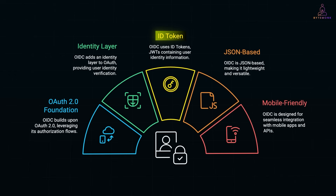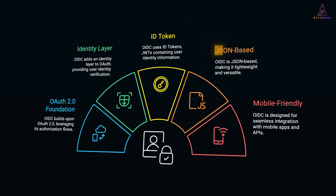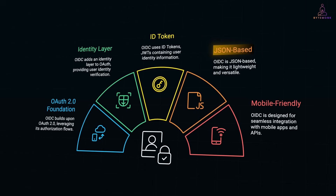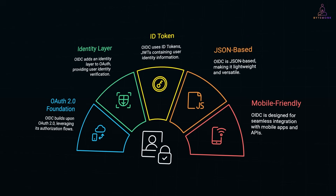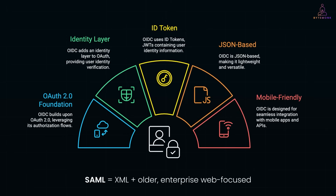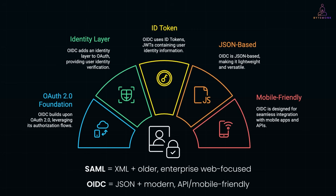The result is the same basic SSO experience as SAML: log in once with your IDP and get redirected back to the app with proof of your identity. But OIDC is JSON-based, lightweight, and works seamlessly for mobile apps, single-page applications, and APIs. In short: SAML is XML-based, older, and enterprise web-focused. OIDC is JSON-based, modern, and API and mobile-friendly.